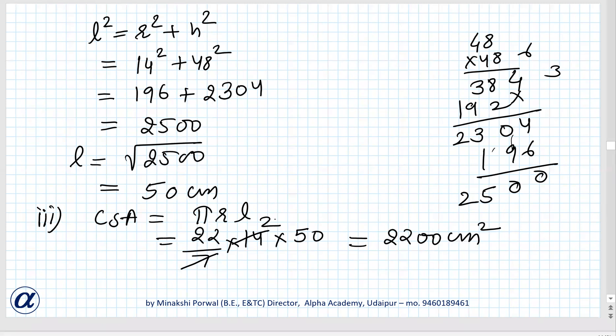This is equal to 2200 cm². 15 into 50 into 2 is 100, 2200 cm². These are the answers.